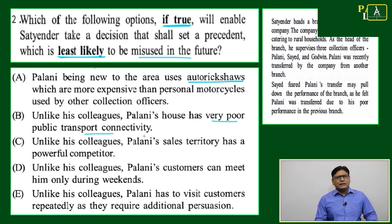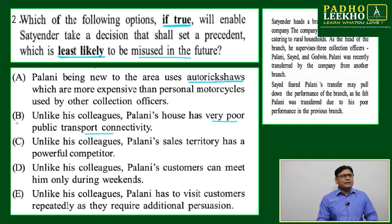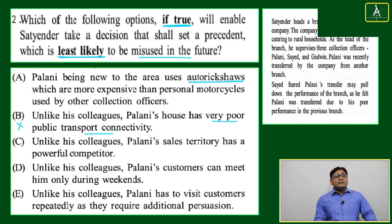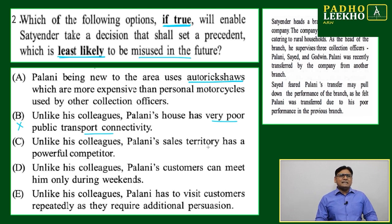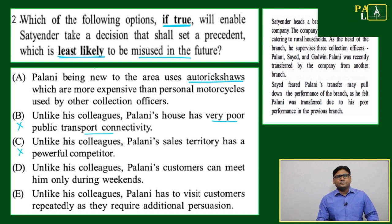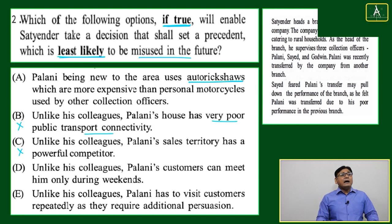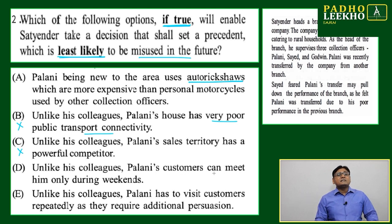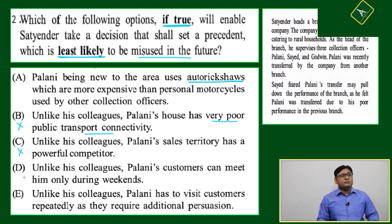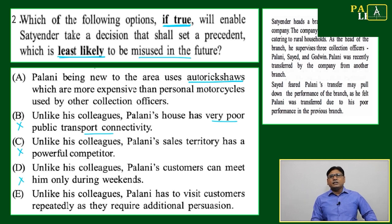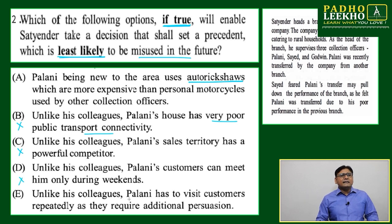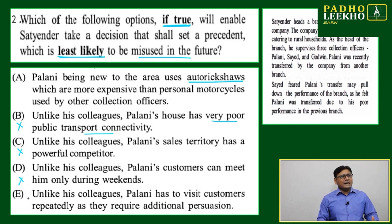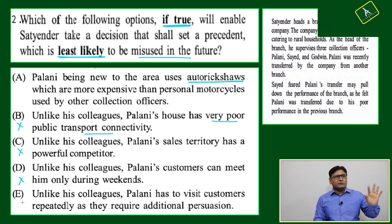Option B: 'Unlike his colleagues, Palani's house has very poor public transport connectivity' — this cannot be the answer. Option C: 'Unlike his colleagues, Palani's sales territory has a powerful competitor' — this is also not related here, as the question is asking about what is least likely to be misused. Option D: 'Unlike his colleagues, Palani's customers can meet him only during weekends' — this is also not impactful.